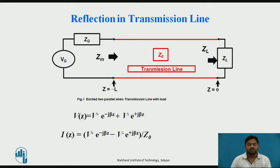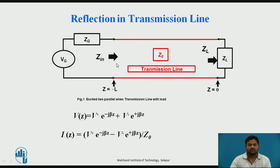So, reflection in the transmission line. What is the meaning of reflection in the transmission line? As we have studied, there are two components in the transmission line equation. One is the transmitted component, which is the normal component, and the other is the reflected component. The wave traveling from left to right is denoted by a plus sign, and the wave traveling in the opposite direction is denoted by a minus sign — that is called the reflected wave. The wave traveling from left to right is the transmitted wave.